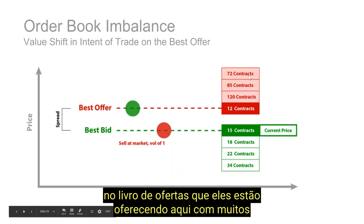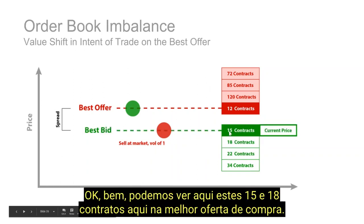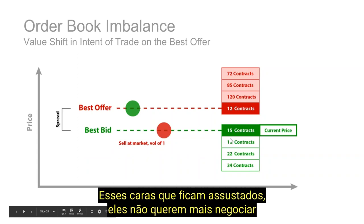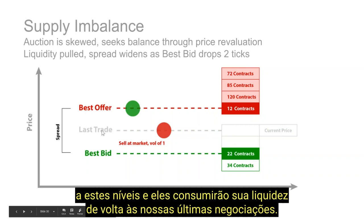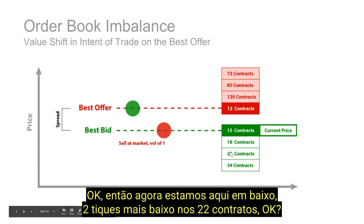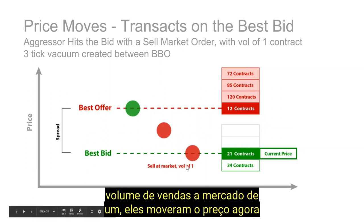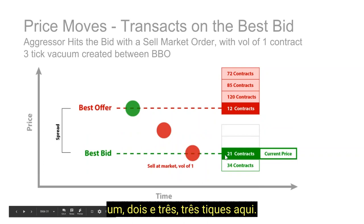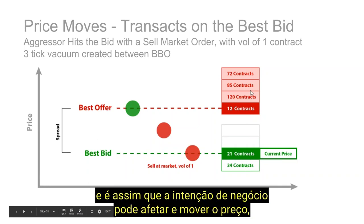How that imbalance affects price: these 15 and 18 contracts on the bid get scared — they don't want to trade at these levels and they'll pull their liquidity. Our last trade still occurred with volume of one, but the best bid has now shifted down a couple of ticks. With a volume of one sell market order, they've moved price three ticks. We consume one contract and that becomes the current price. This is how the intent of trade can affect and move price. In periods of high volatility — like fundamental releases or economic data releases, or just a skittish market — there's a lot of volatility because there is a lack of liquidity, and any imbalance with high liquidity will show pushes and pulls of markets very quickly.